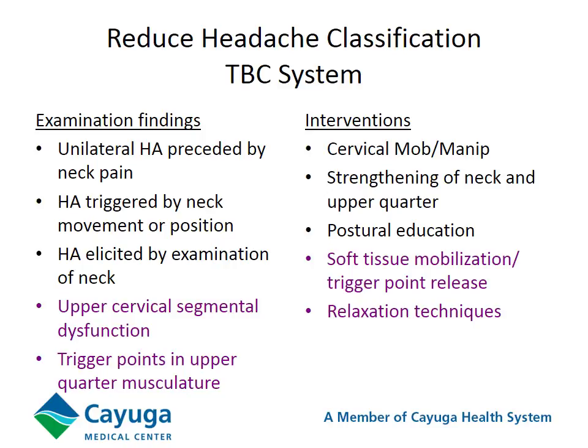The reduce headache classification. In 2004 this was originally described as unilateral headaches preceded by neck pain. They may have headaches triggered by neck movement or position, elicited by examination of the neck — in other words, you can reproduce their symptoms in the clinic. We may particularly see dysfunction of the upper cervical segments, typically from the occiput to approximately C4. Other things to consider would be trigger points in the upper quarter musculature. Interventions would be cervical mobilization and manipulation, strengthening of the neck and upper quarter, postural education, and we may also want to consider soft tissue mobilization or trigger point techniques, and also relaxation — in other words, managing stress.